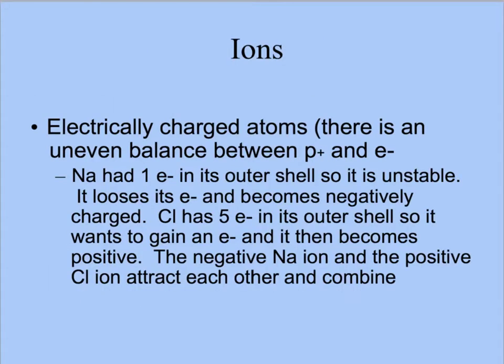Ions are electrically charged particles, which means they either have a positive charge or a negative charge. This is caused when there is an uneven balance between protons and electrons. So, for example, if we have an atom with 10 protons and 11 electrons, it will have a negative charge because there is one more electron than a proton.